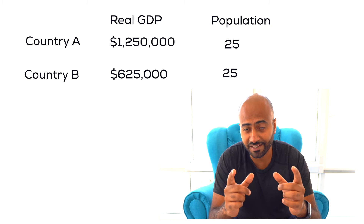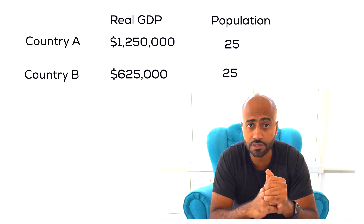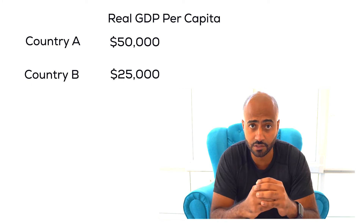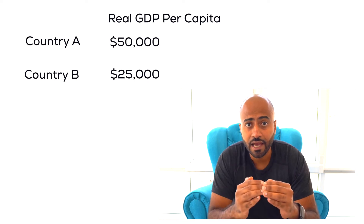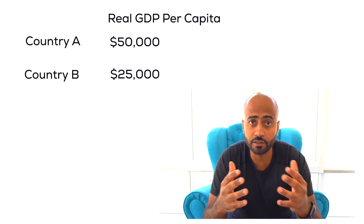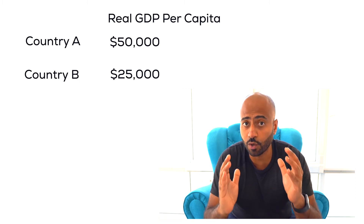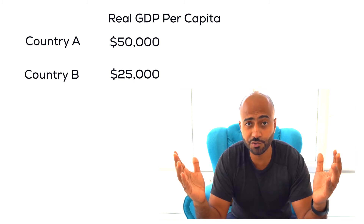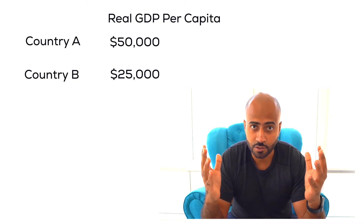Real GDP per person in Country A is $50,000, and in Country B it's $25,000. We can say people in Country A are living a life twice as good as people in Country B based on real GDP per person. Assuming we only choose which country to live in based on real GDP per person, most of us would pick Country A.